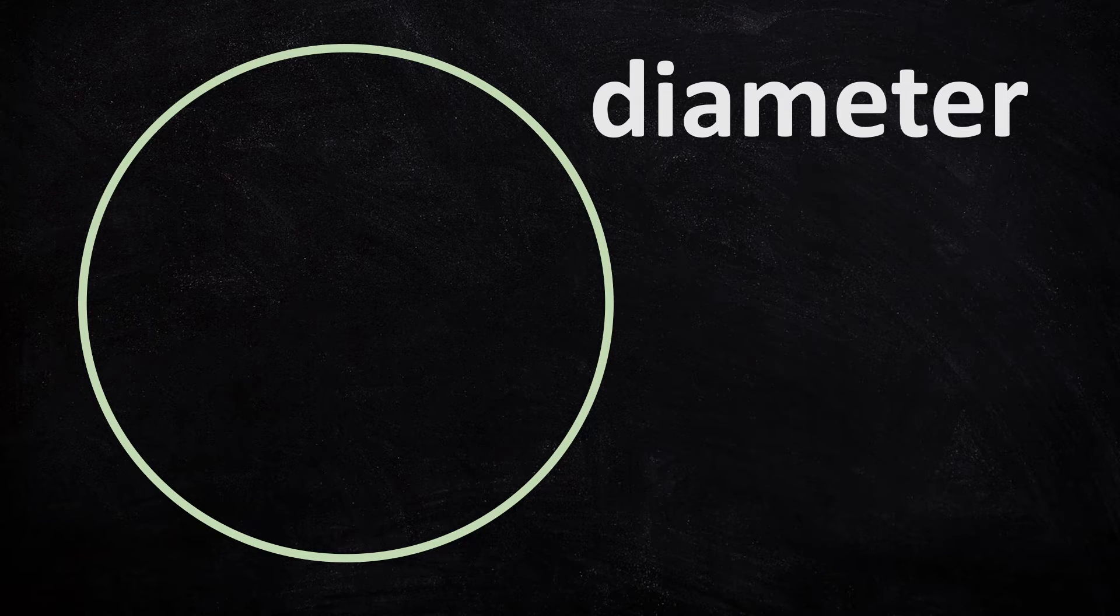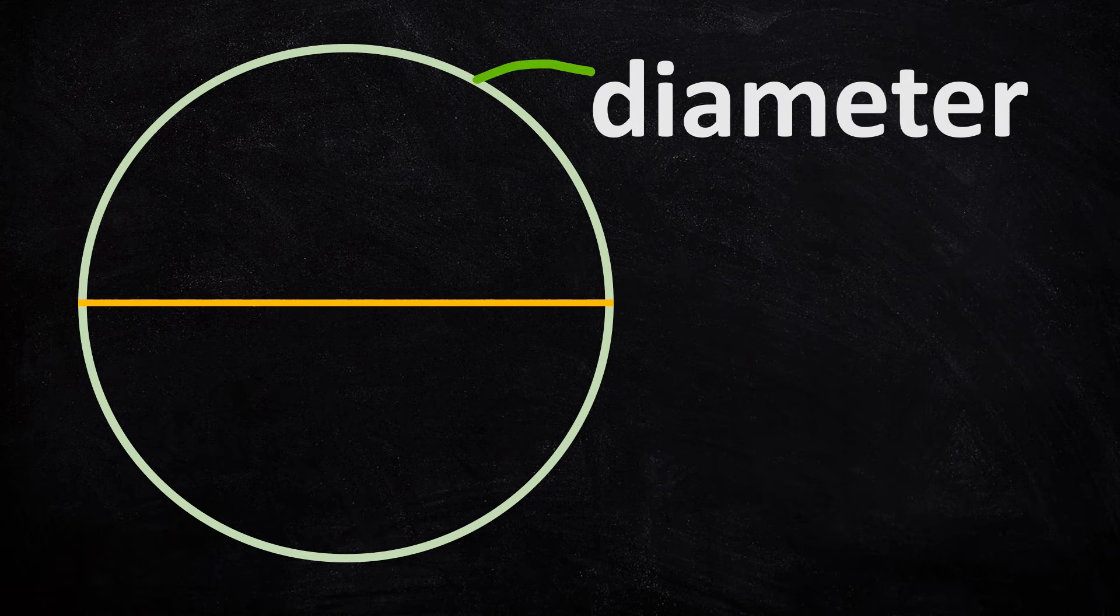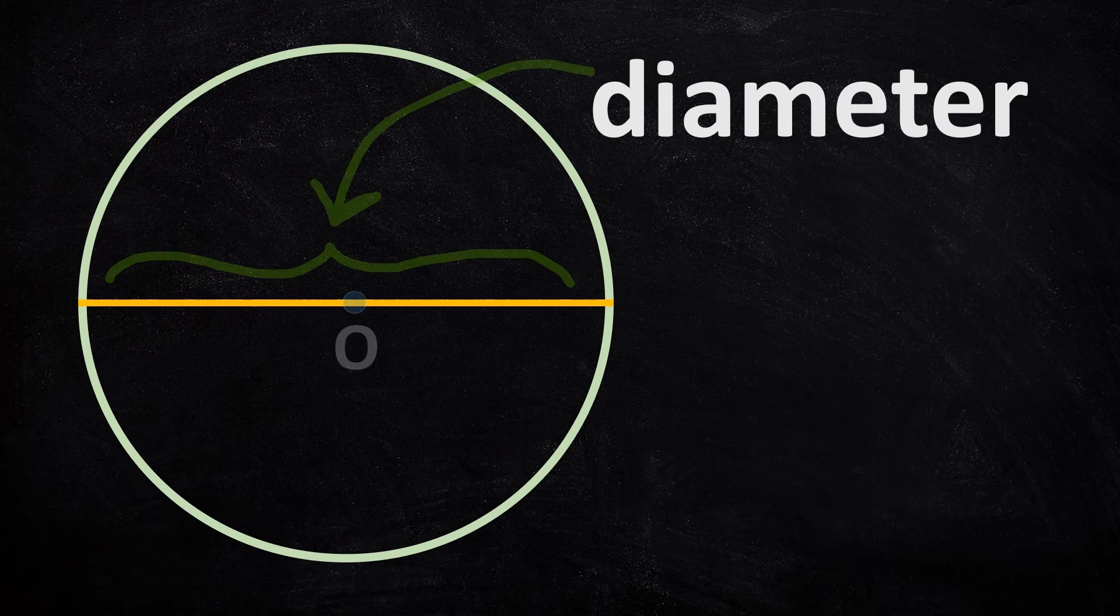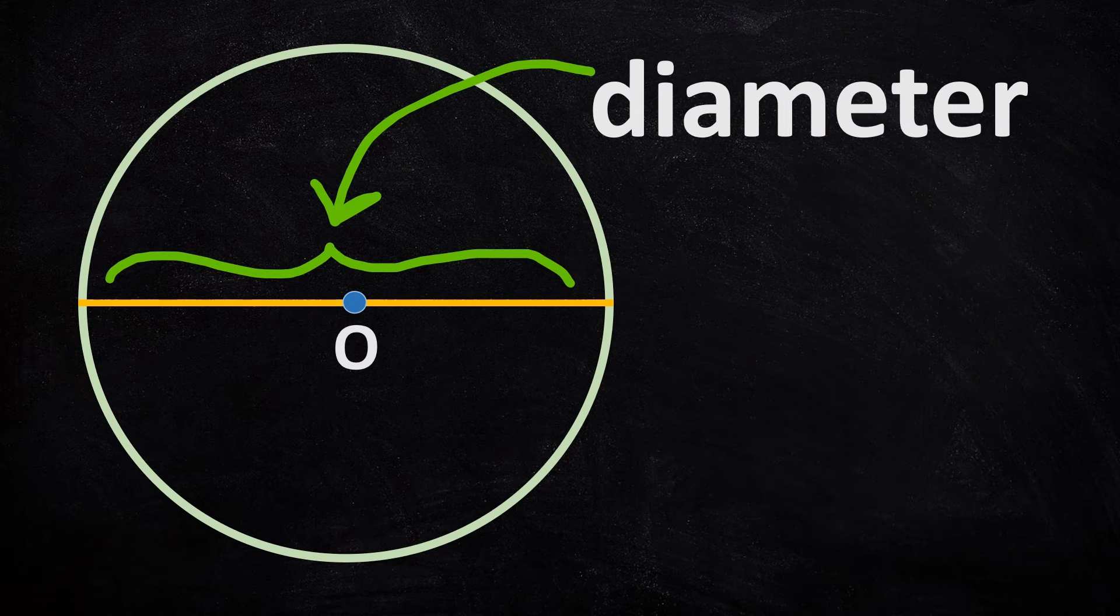The diameter is a line that goes from one edge of the circle to the opposite edge. And it must pass through the center.